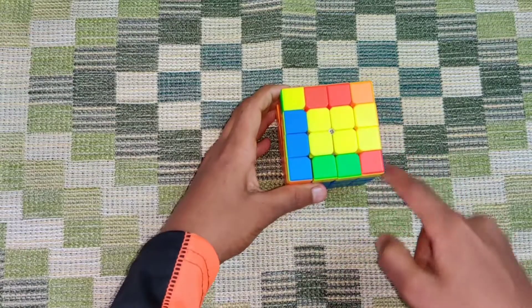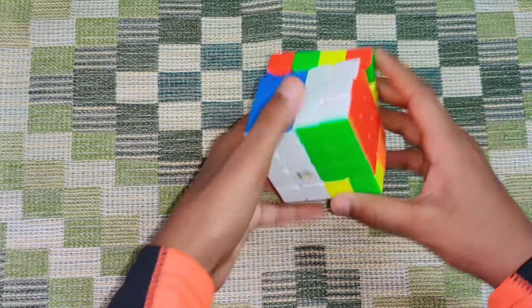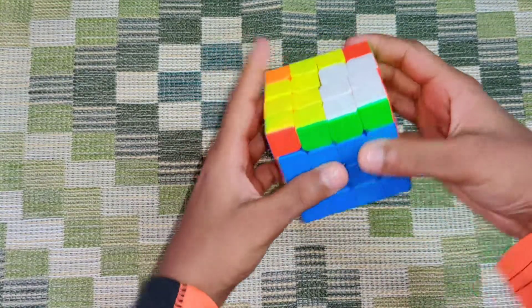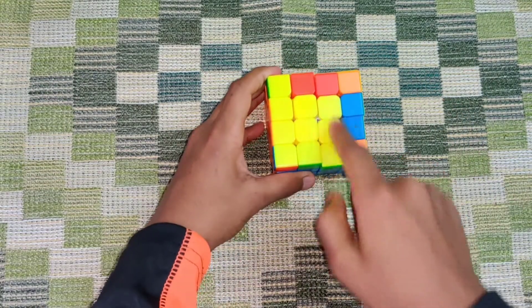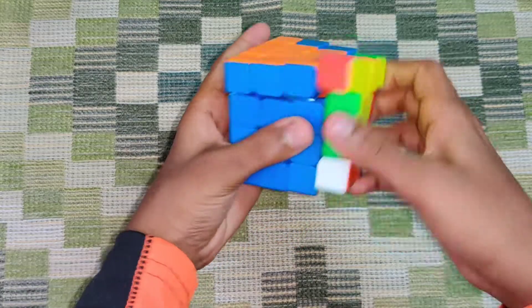Therefore you have a parity. You can just do the same algorithm when you get this case and you have fixed OLL parity, and you can just go into normally solving it like a 3x3.